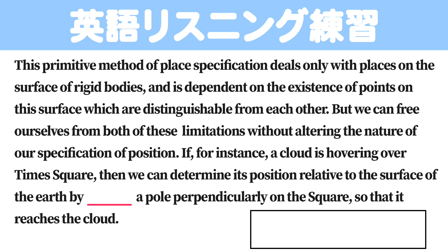This primitive method of place specification deals only with places on the surface of rigid bodies and is dependent on the existence of points on this surface which are distinguishable from each other.